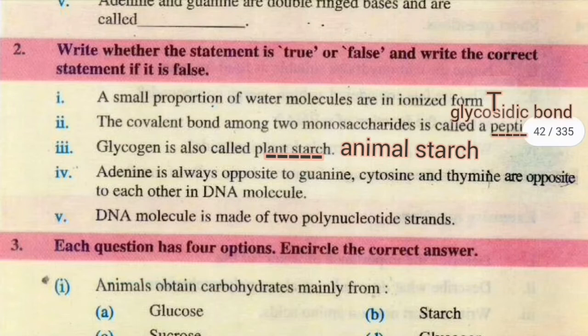Number 4, adenine is always opposite to guanine, cytosine and thymine are opposite to each other in DNA molecule. This is false. Number 5, DNA is made up of two polynucleotide strands. Yes, answer is true.